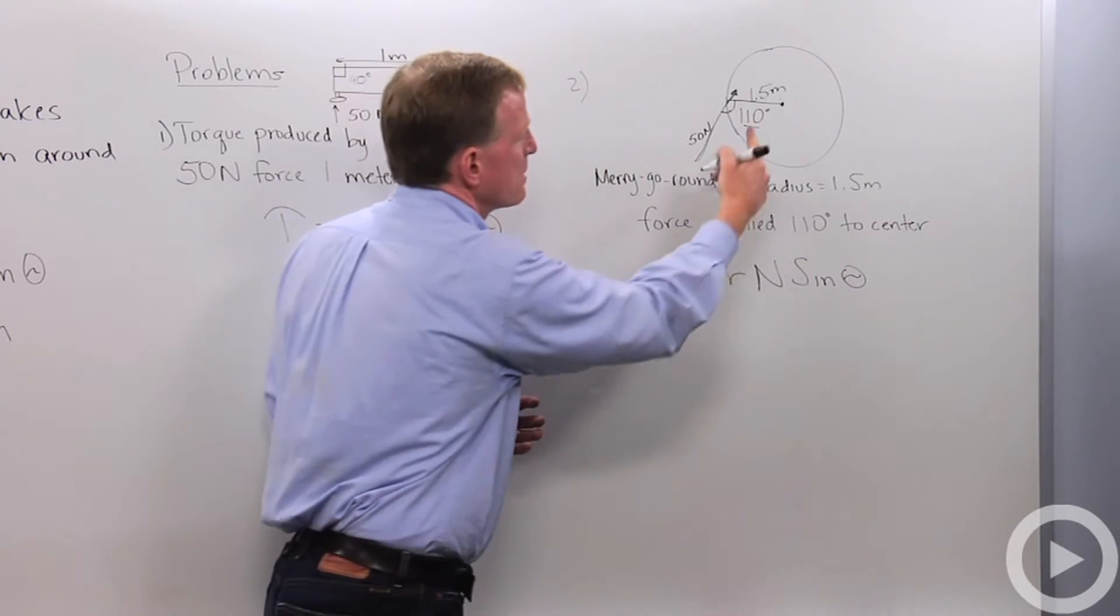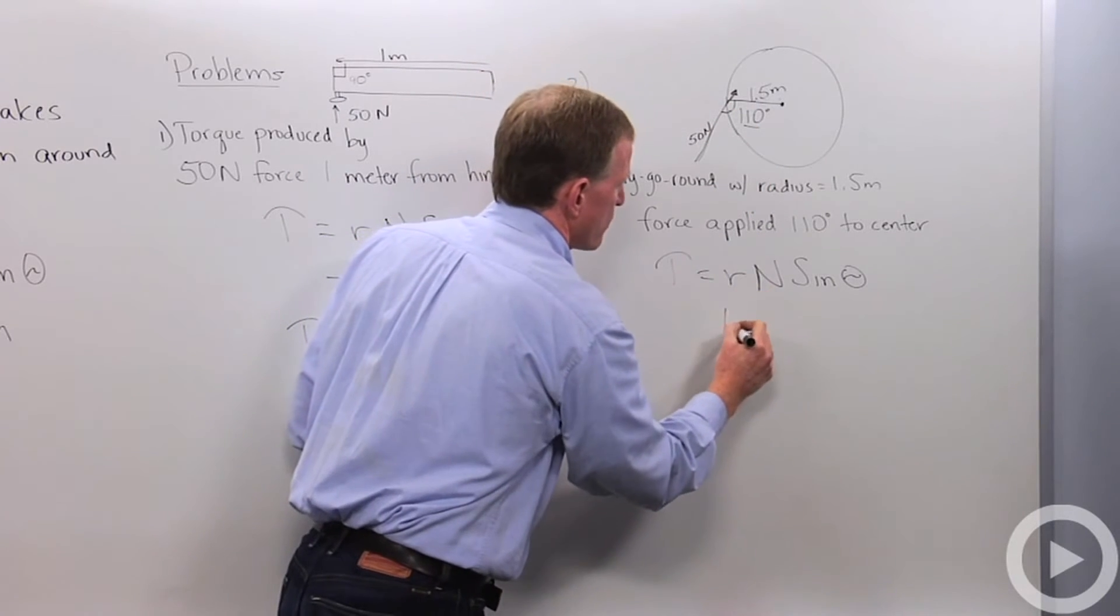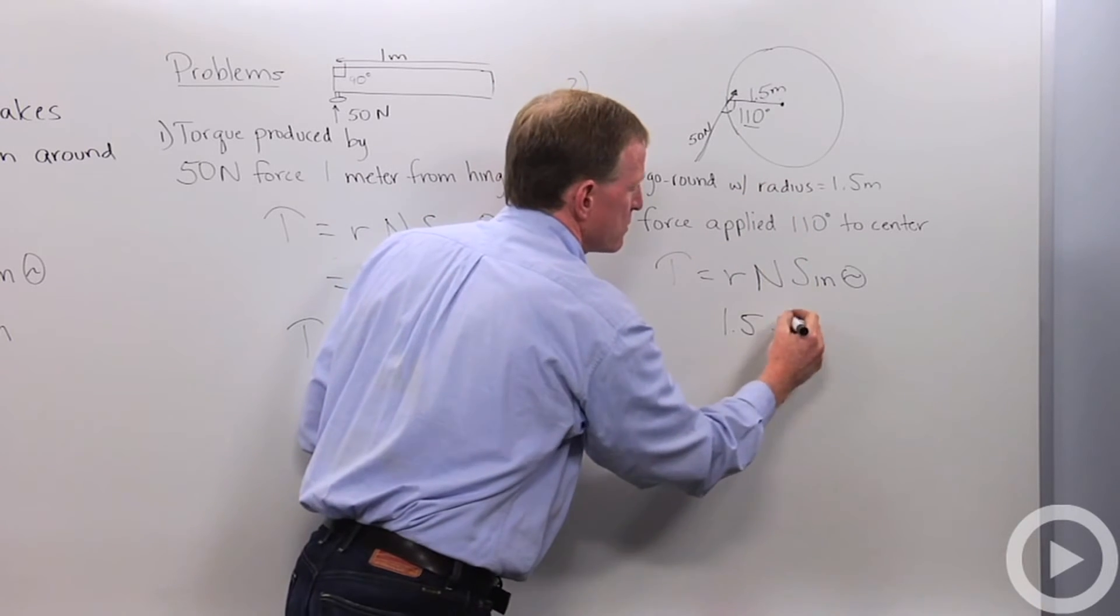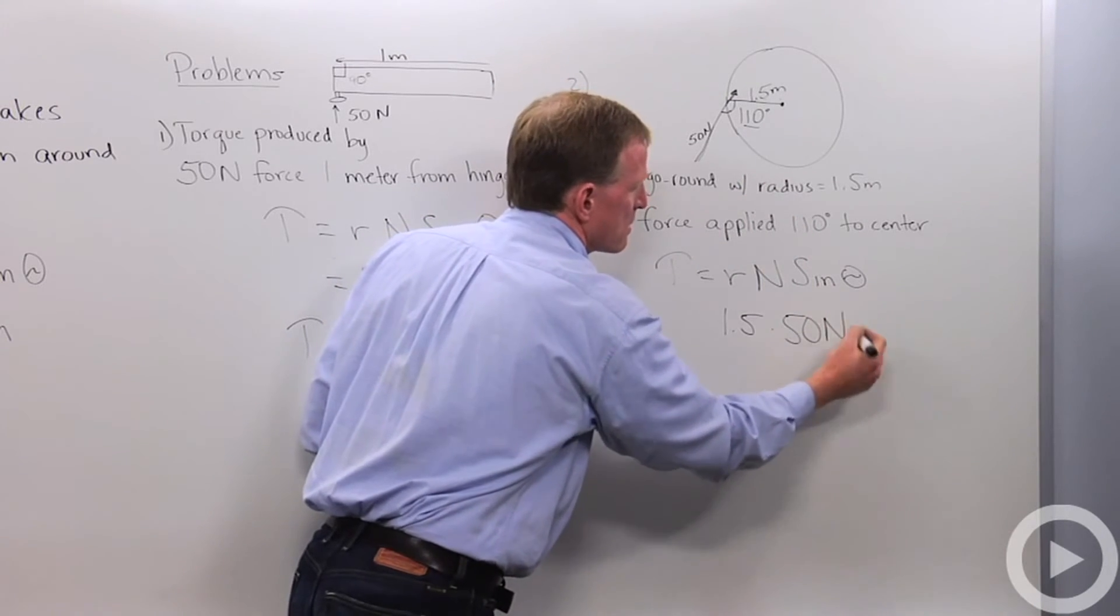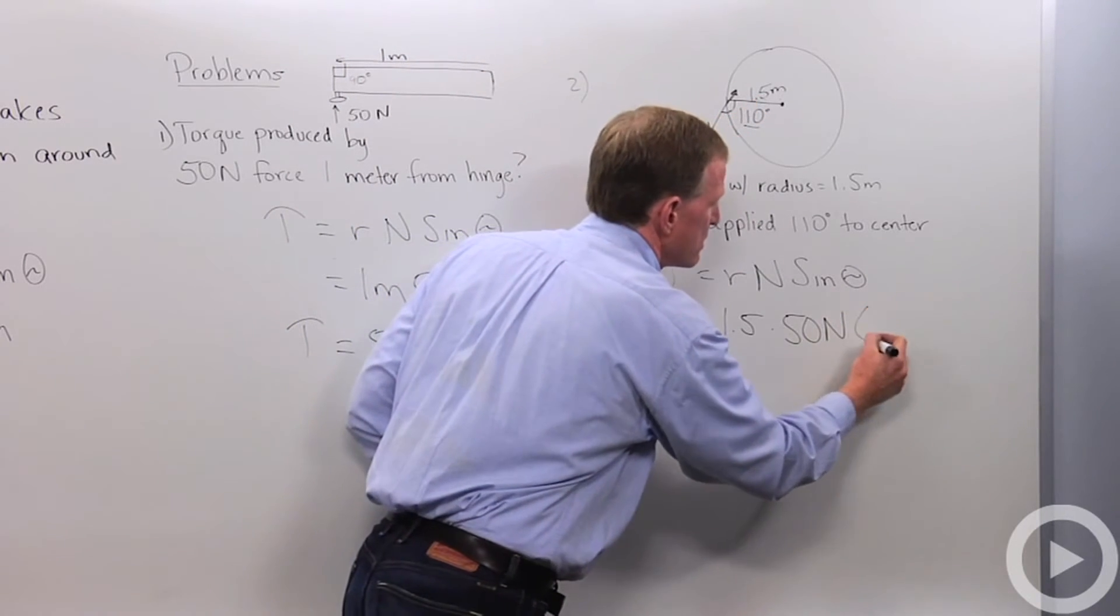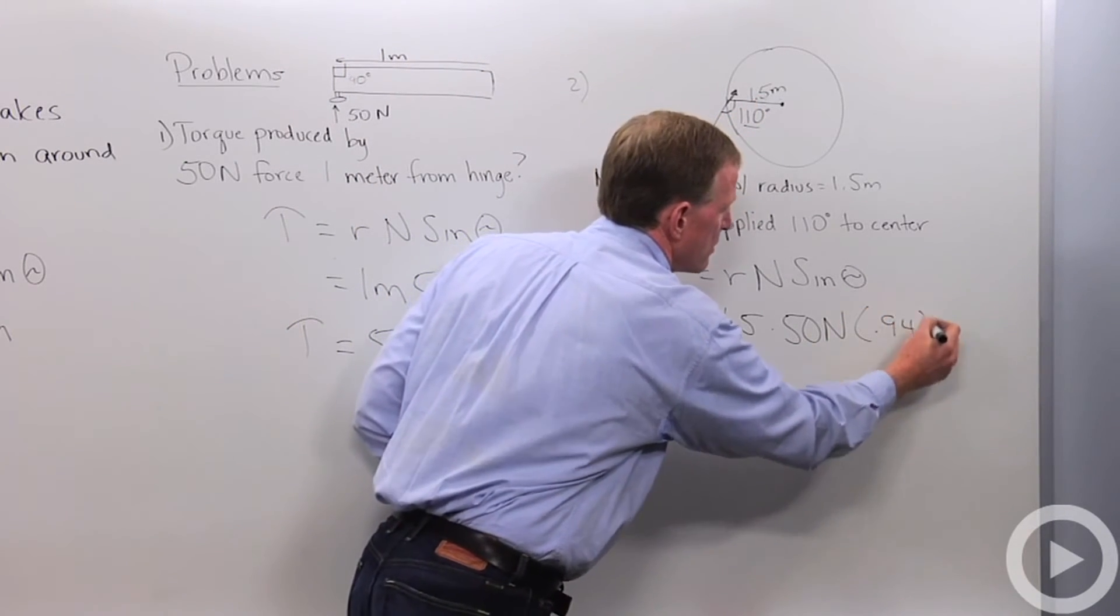Again, I can just put in my numbers, and I've got 1.5 for my radius. I've got 50 newtons, and the sine of this 110 is going to be 0.94.